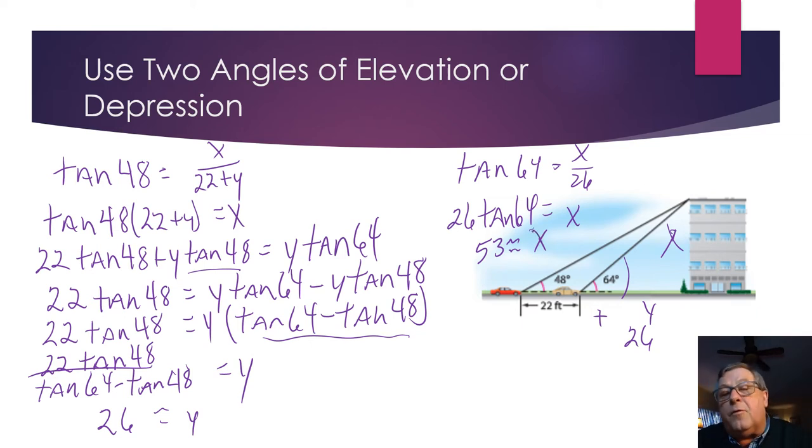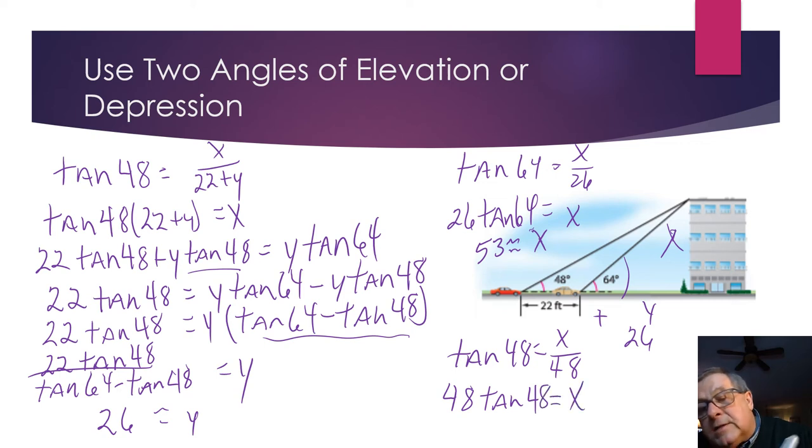Now I might want to confirm that by using the first angle of elevation, 48. So let's set that up. So I'd have the tangent of 48 equals X over, let's see, I've got 22 plus 26, that's 48. And then to solve for X, I've got 48 times the tangent of 48 equals X. And when I compute that, shazam, X, the height of that building, this is confirming my answer, is approximately 53 feet.